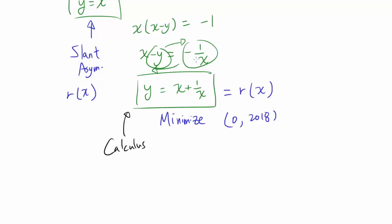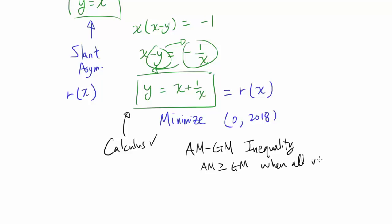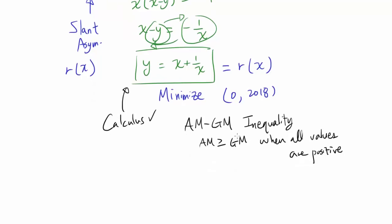One easy way is to use calculus: differentiate y equals x plus 1 over x, set it equal to 0, and check that it's a minimum using the first or second derivative test. But another easy way without calculus is to use the AM-GM inequality — arithmetic mean geometric mean inequality — which states that the arithmetic mean is greater than or equal to the geometric mean when all values are positive. Since x is in (0, 2018), our x values are positive, so we can use AM-GM.